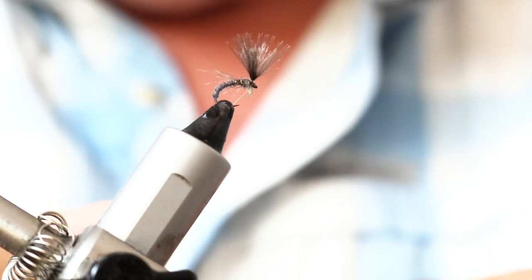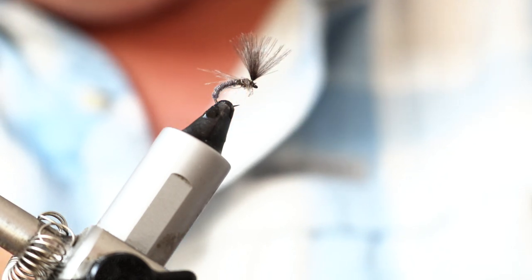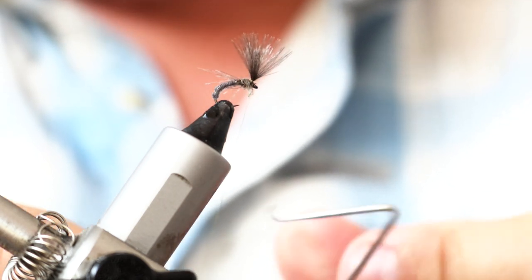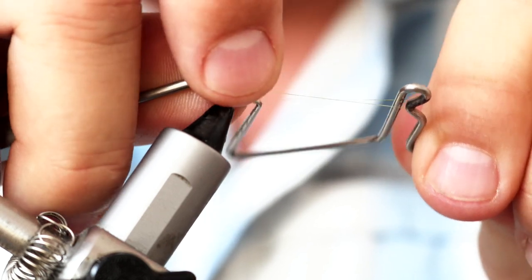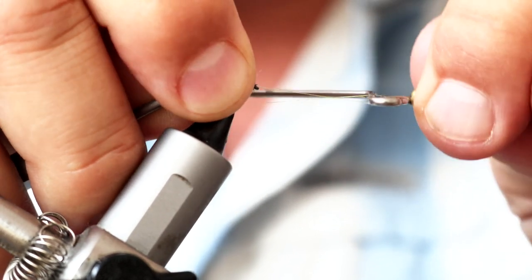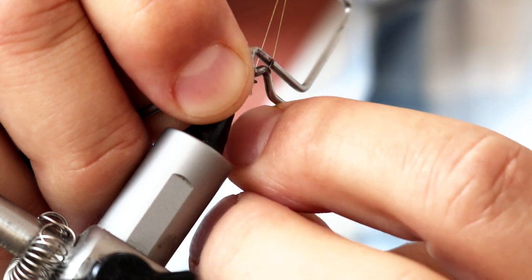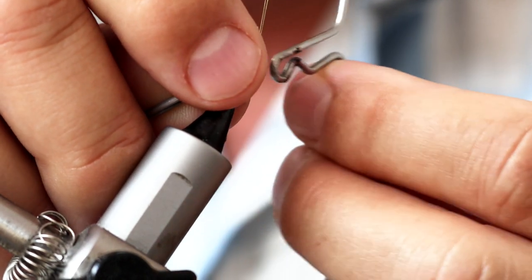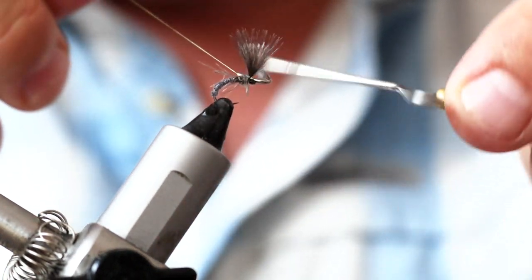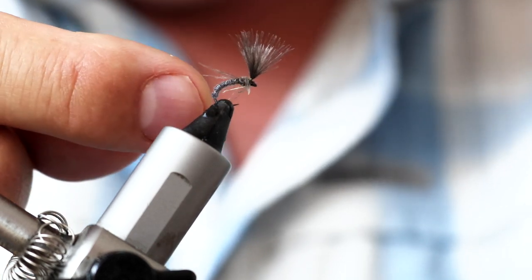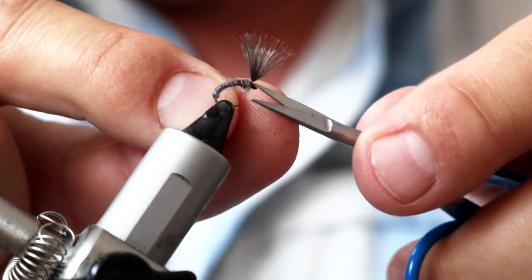And then I'm just going to grab my whip finish tool. Again, just push that plume back, so you can get your tool in there and finish the fly off, and just carefully pull down, trying not to trap any of the strands in there, and trim off.